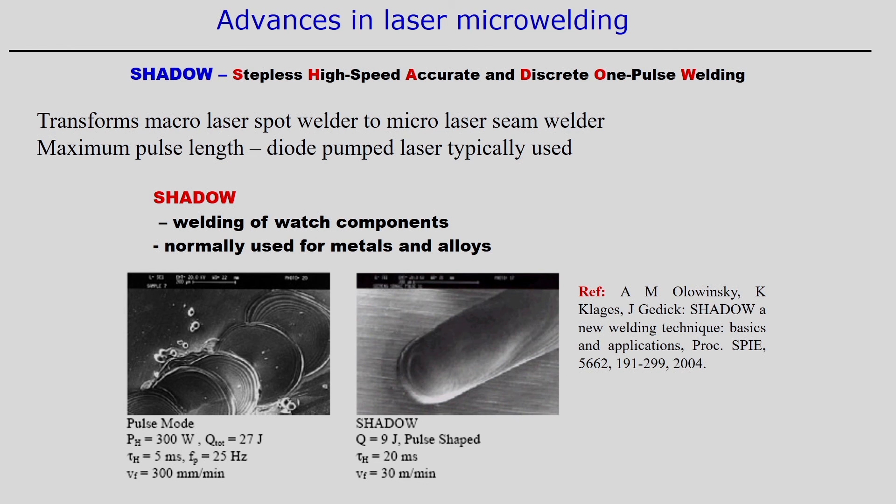The same laser can be converted to the SHADOW technique by utilizing the full duration of one single pulse — the pulse on-time — and then traversing across the substrate material at very high speed. This means the total pulse duration is used while covering a certain distance, so the surface appearance becomes much better compared to the earlier method. That is the SHADOW technique: a simple pulse laser converted to the SHADOW technique.